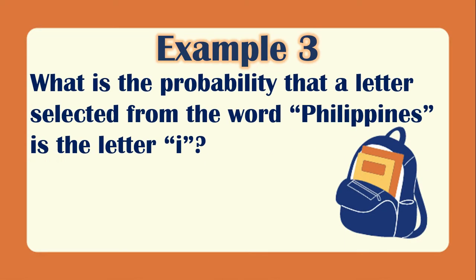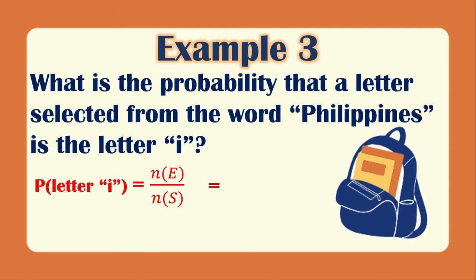Example 3: What is the probability that a letter selected from the word Philippines is the letter I? The favorable outcome is 3, because there are 3 I's in Philippines. The total number of letters is 11. So the probability of getting the letter I is 3/11, which is already the final answer.